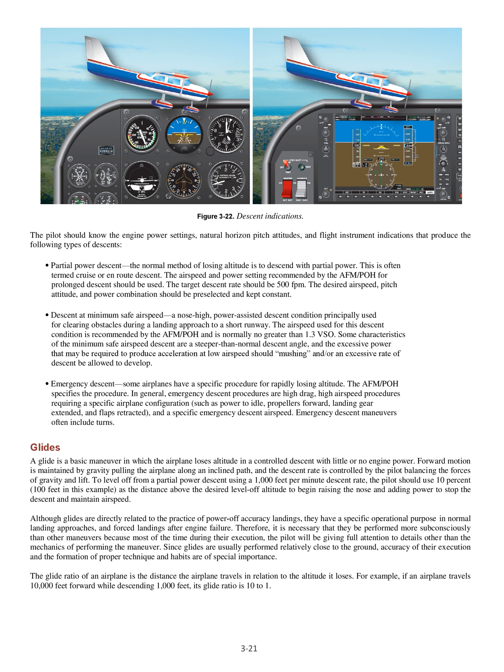Emergency descent. Some airplanes have a specific procedure for rapidly losing altitude. The AFM/POH specifies the procedure. In general, emergency descent procedures are high drag, high airspeed procedures requiring a specific airplane configuration such as power to idle, propellers forward, landing gear extended, and flaps retracted, along with a specific emergency descent airspeed. Emergency descent maneuvers often include turns.